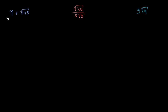9 is clearly a rational number. You can express 9 as 9 over 1, or 18 over 2, or 27 over 3. So it can clearly be expressed as the ratio of two integers. But what about the square root of 45?